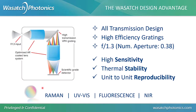The power of the Wasatch spectrometers stems from the all-transmission optical design — a transmission grating coupled with transmission optics. This gives you a lens system with a huge numerical aperture, or a low f-number. At any rate, it gives you a lot of light. Couple this with a high-efficiency grating and you get very high sensitivity — a huge signal, 10, 20, 30 times over what you might be used to.